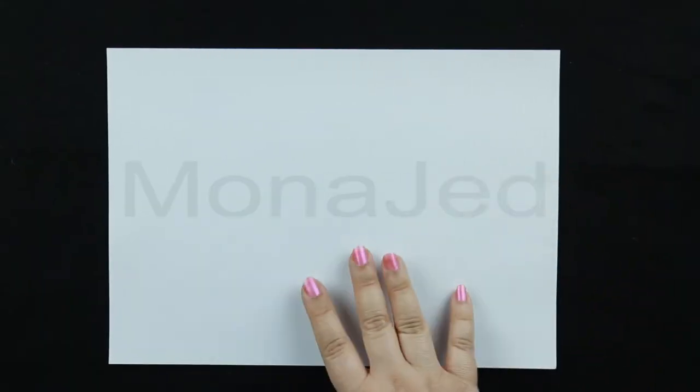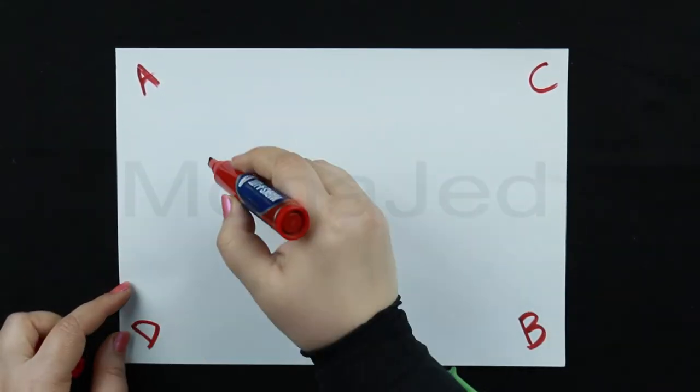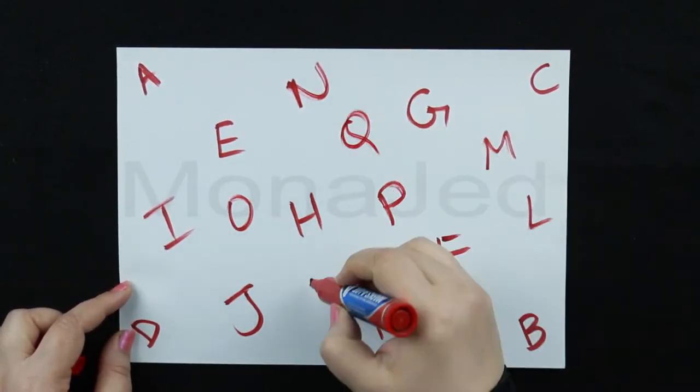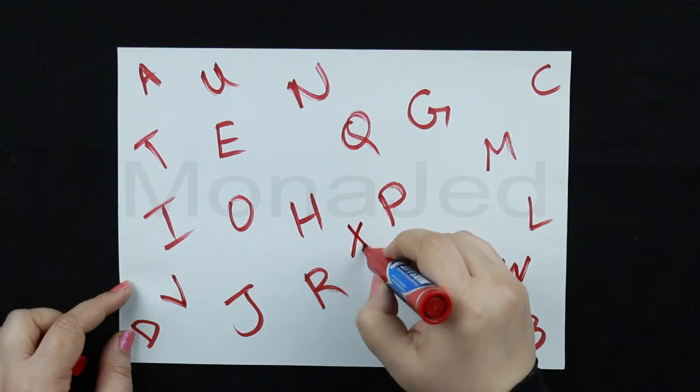If you don't want to stick these alphabets, there are other fun ways to play with them. Let me show you. Just take a normal piece of paper and with a marker, just put in all the alphabets randomly.